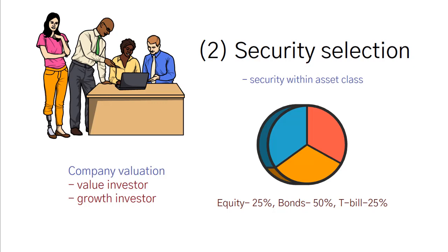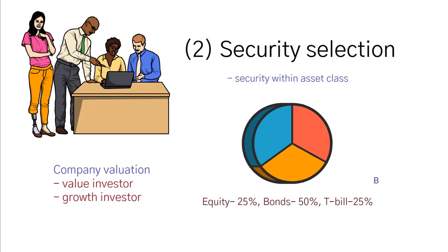There is no preset rule as to which one comes first. When constructing your portfolio, you can either start with security analysis and then asset allocation. This is called the bottom-up approach.